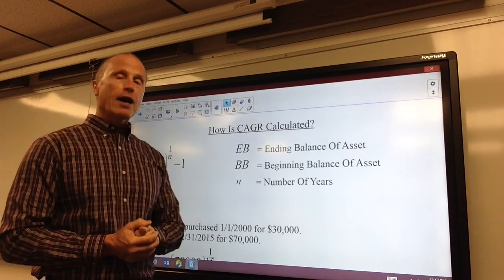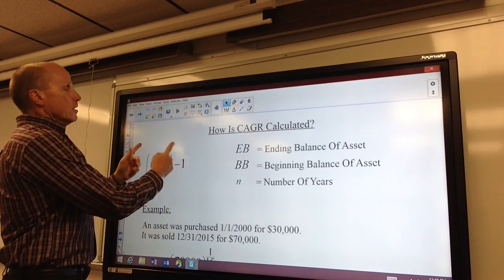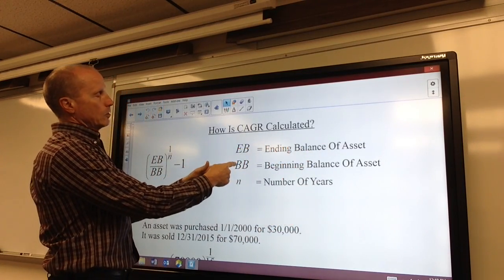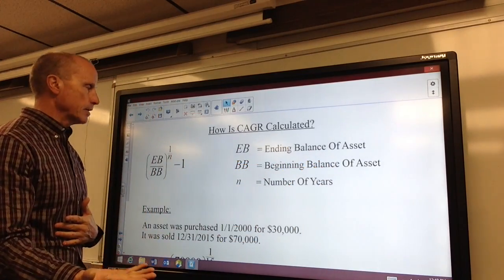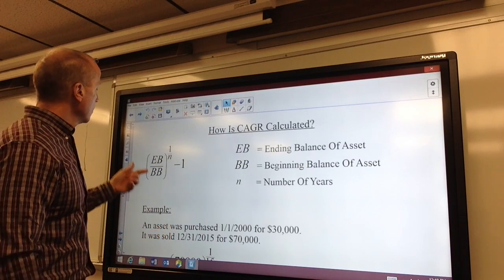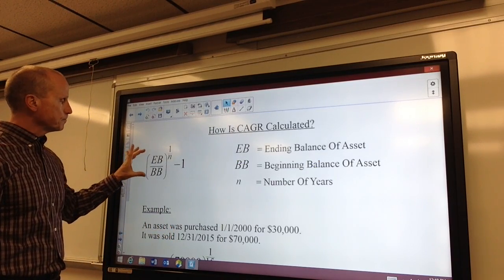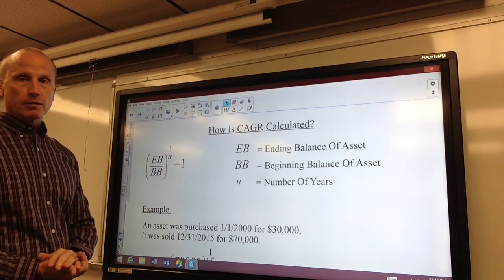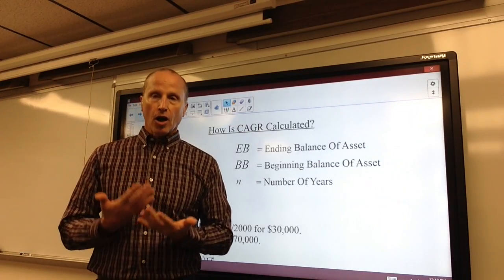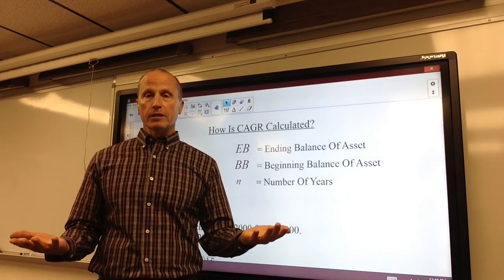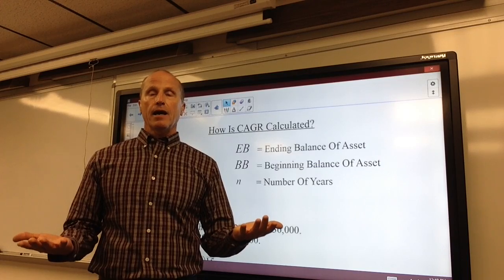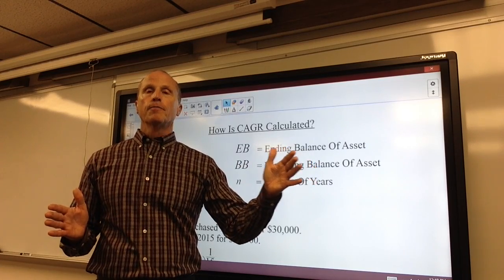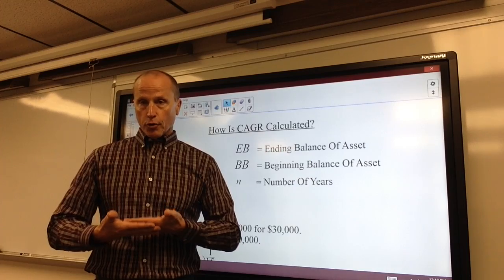How is the compounded annual growth rate calculated? Let EB equal the ending balance, BB equal the beginning balance, and N equal the number of years invested. You take the ending balance divided by the beginning balance, raise that to the power of 1 over N, and then subtract 1. This gives you the compounded annual growth rate — regardless of volatility in that time period, it tells you what the investment would have earned on a smooth compounded annual basis.